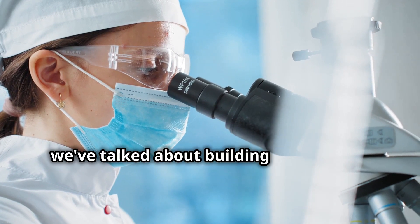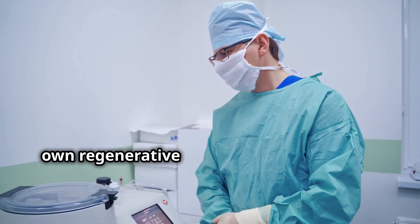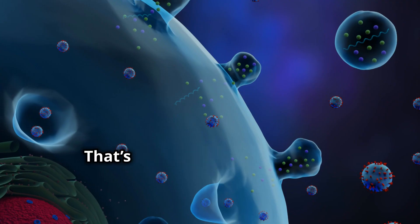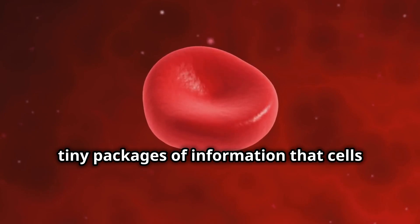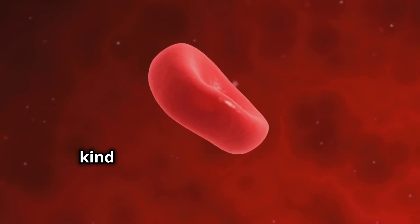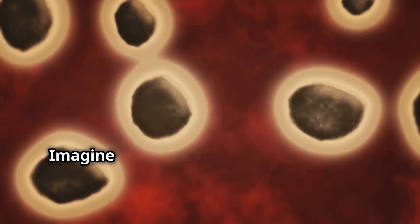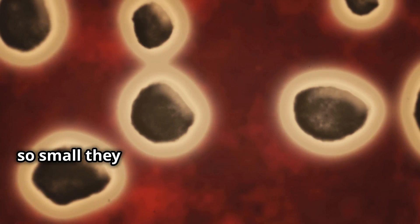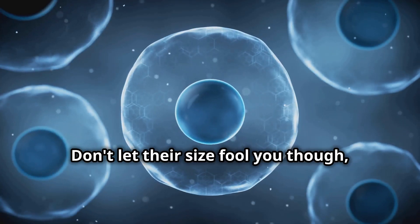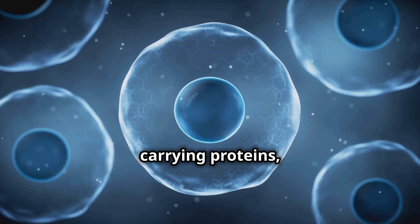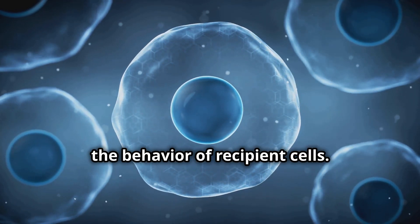So far we've talked about building organs from the ground up, but what if we could harness the body's own regenerative power to heal and repair damaged organs? That's where exosomes come in, tiny packages of information that cells use to communicate with each other, kind of like little cellular couriers delivering messages throughout the body. Imagine these exosomes as tiny bubbles, so small they make a red blood cell look gigantic. Don't let their size fool you though, they're packed with information carrying proteins, genetic material, and other molecules that can influence the behavior of recipient cells.